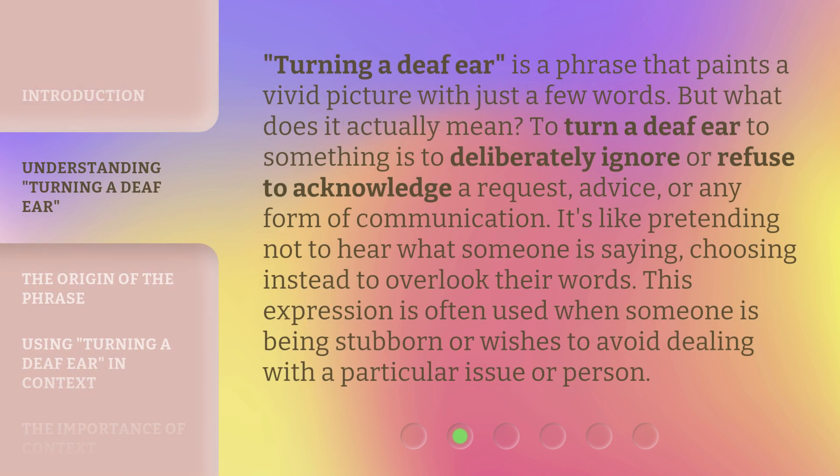Turning a deaf ear is a phrase that paints a vivid picture with just a few words. But what does it actually mean? To turn a deaf ear to something is to deliberately ignore or refuse to acknowledge a request, advice, or any form of communication. It's like pretending not to hear what someone is saying, choosing instead to overlook their words. This expression is often used when someone is being stubborn or wishes to avoid dealing with a particular issue or person.